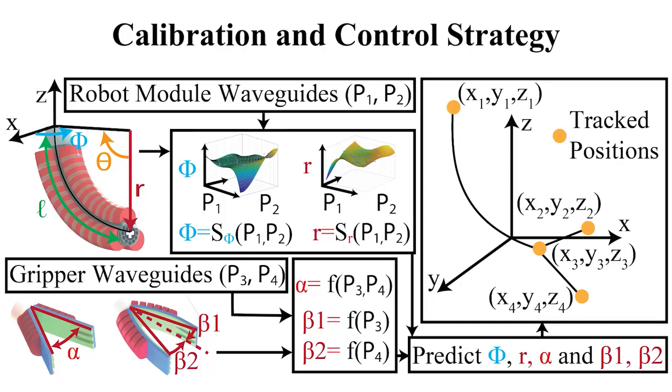The robot is calibrated so that the XYZ positions of the tip are mapped with an electromagnetic tracker. This is used to determine the true R and phi values in the constant curvature model, and then the waveguide sensor signals are mapped to a surface to predict the R and phi in subsequent testing and controls.